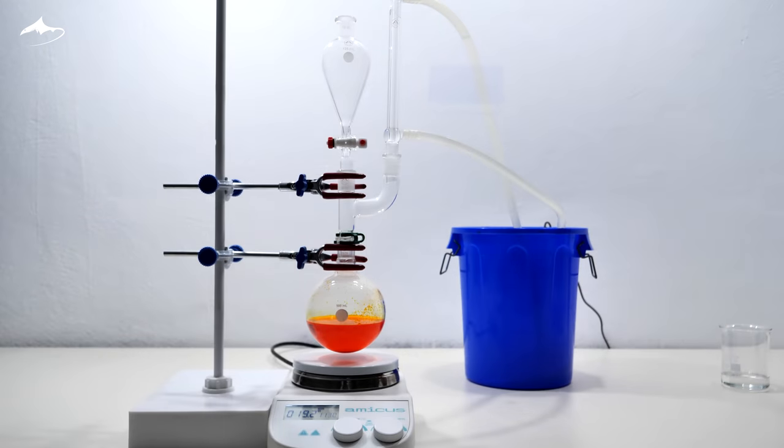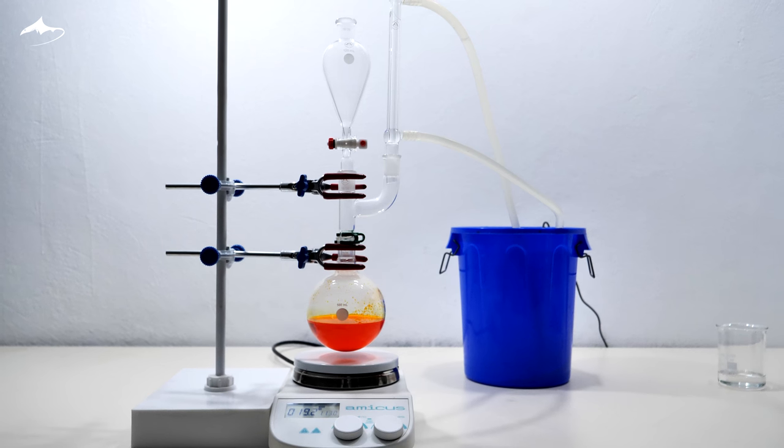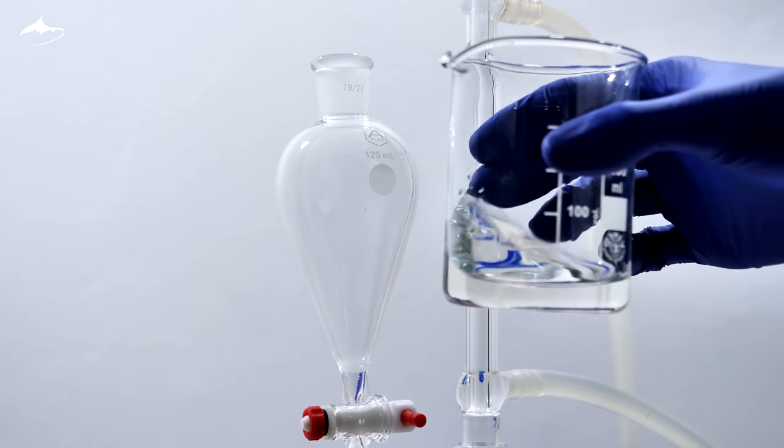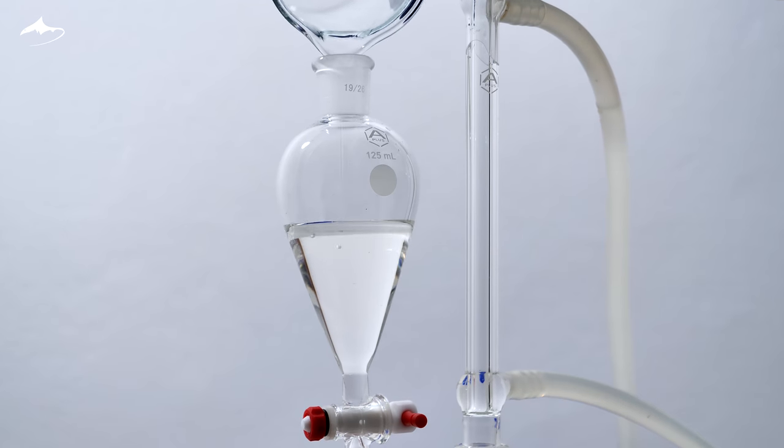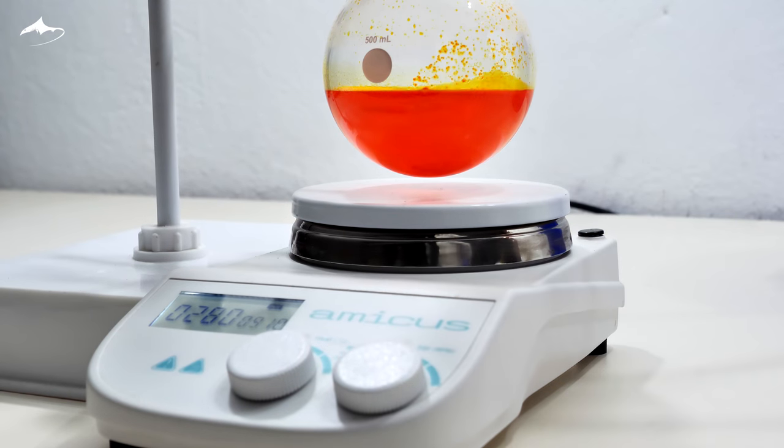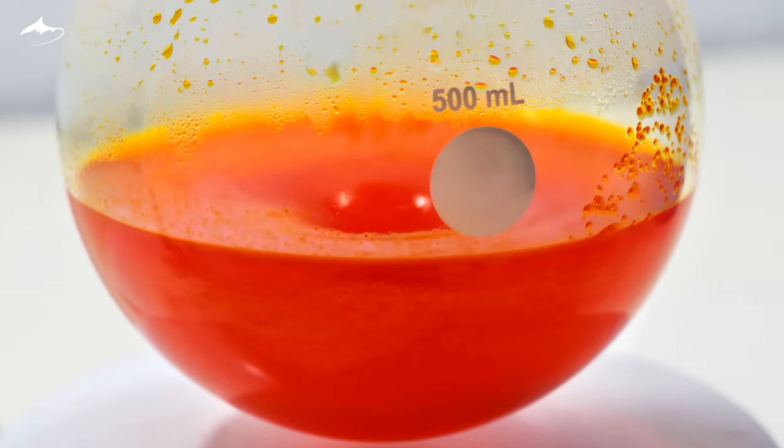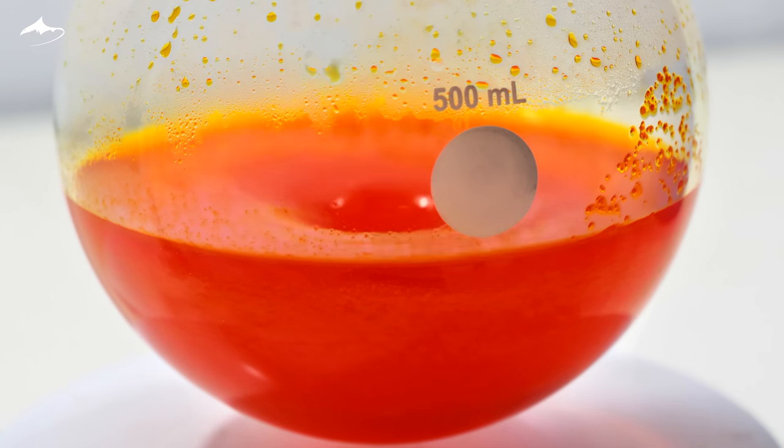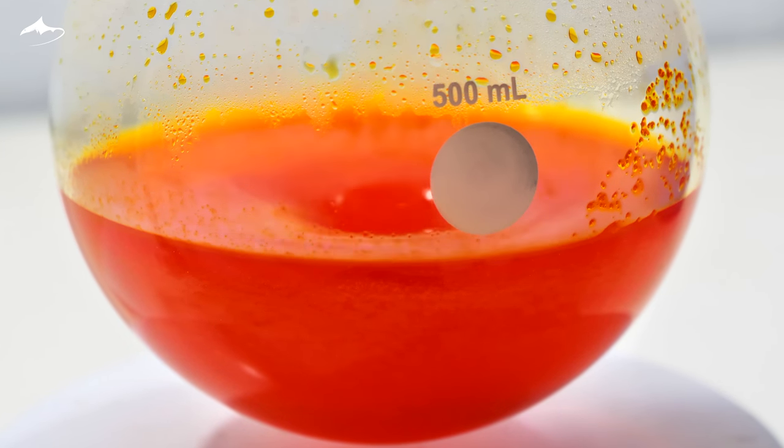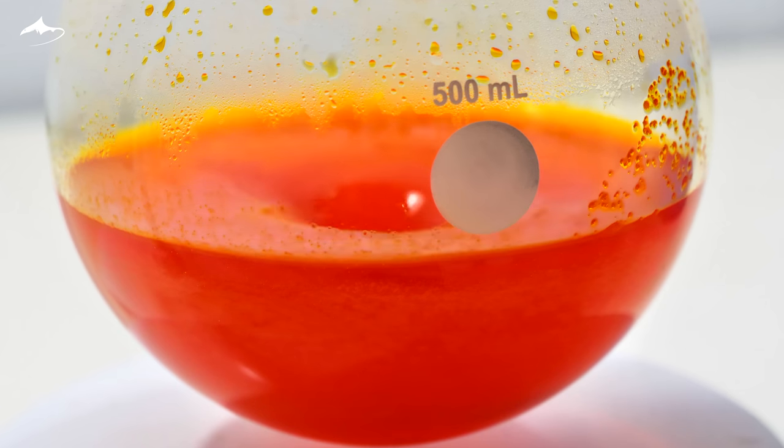This is the apparatus I set up for the reaction. The reducing solution is placed on the dropping funnel, and the stirring is turned on. Since the reaction is exothermic, heating is not needed. The reflux condenser prevents any loss of reaction volume by evaporation.